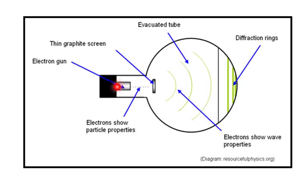and as the electrons pass through, the thin graphite screen is acting like a diffraction grating. You'll end up getting, as the electrons come through, bands where the electrons form and areas where they don't form.